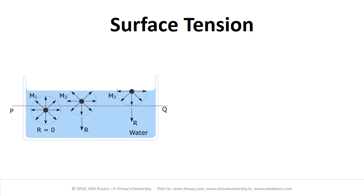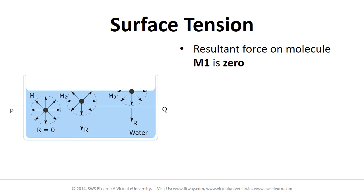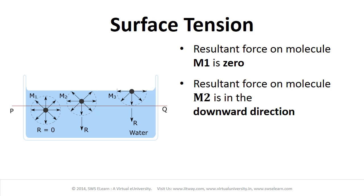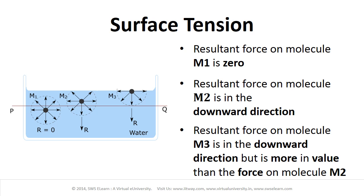In summary, the resultant force on the molecule M1 is zero. The resultant force on molecule M2 is in the downward direction, and the resultant force acting on the molecule M3 is also in the downward direction, but it is greater in value than the force acting on molecule M2.